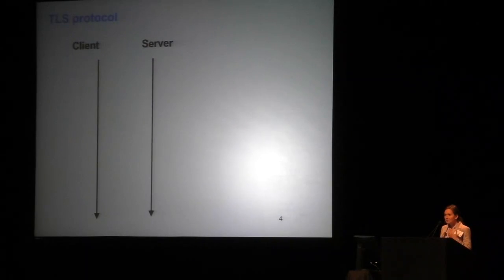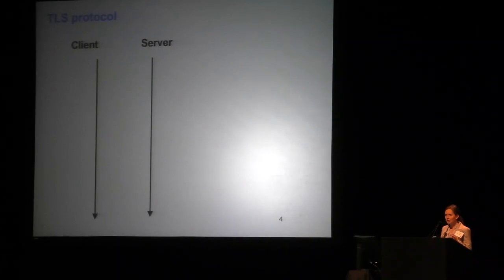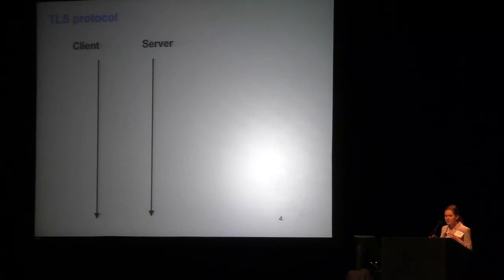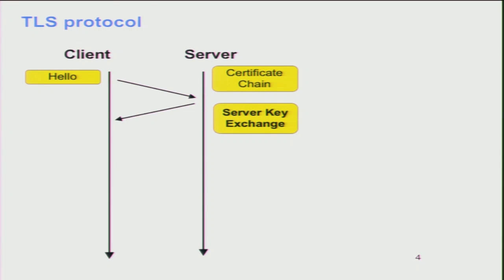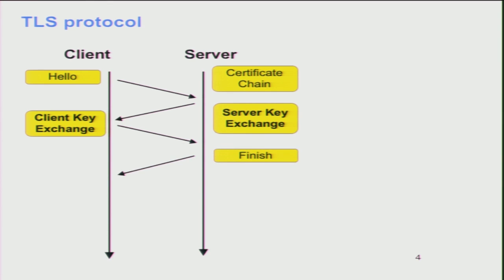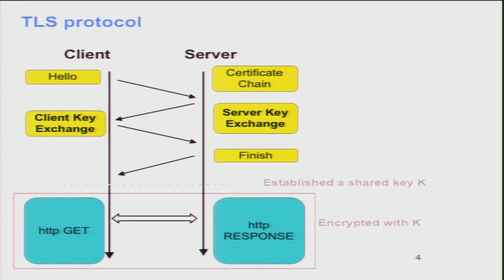Let's see how these primitives are used in TLS. The first part is the handshake where two parties establish a shared symmetric key through a couple of rounds of communication such that any eavesdropper has no idea about the established shared key. The client initiates with a hello message, the server replies with its certificate chain and key exchange message, the client sends his portion, and both sides compute the symmetric shared key K. Onward they encrypt communication using the shared key with a fast symmetric cipher like AES.